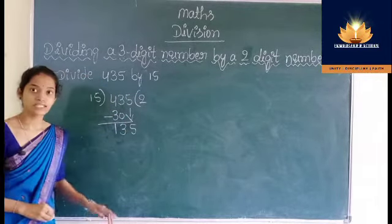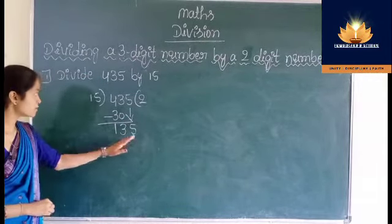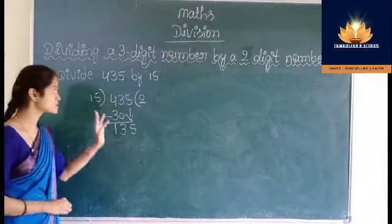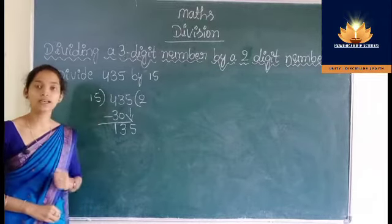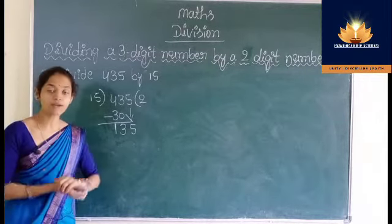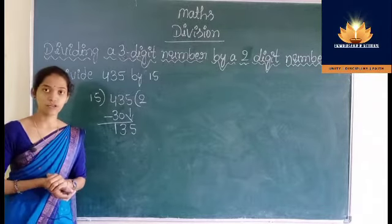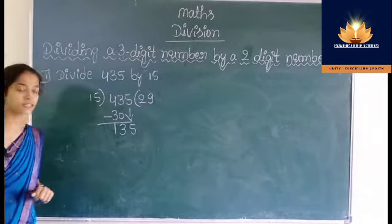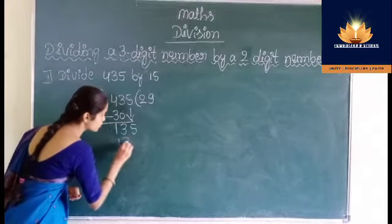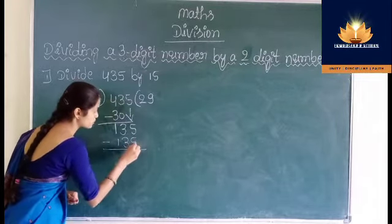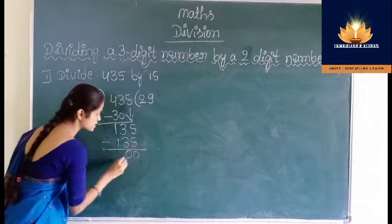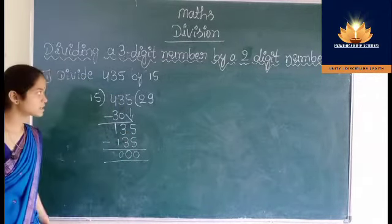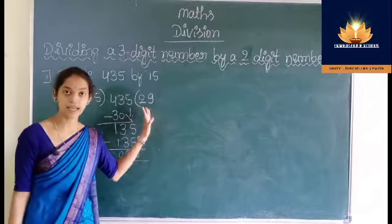Now divide 135 by 15. 135 is exactly divisible by 15 on 9: 15 nines are 135. Write 9 in place of the quotient. Then write the product 135 below this 135. Subtract: 5 minus 5 is 0, 3 minus 3 is 0, 1 minus 1 is 0. So we get 0 as remainder and 29 as the quotient.